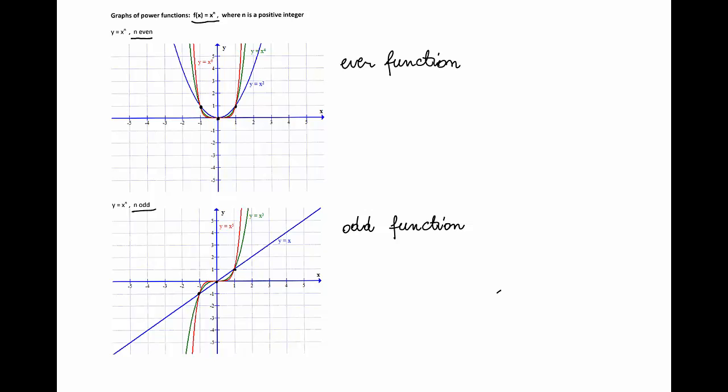For negative x, we have a symmetric image. For n even, the graph looks like the graph of a parabola. For n odd, the graph is symmetric with respect to the origin and looks more like the graph of the cube function.